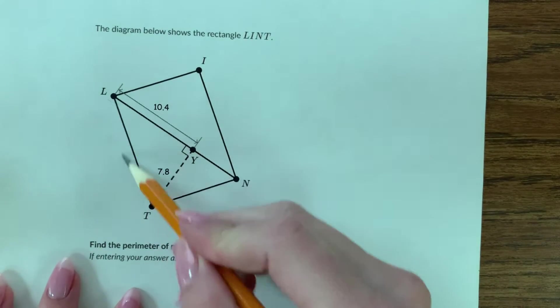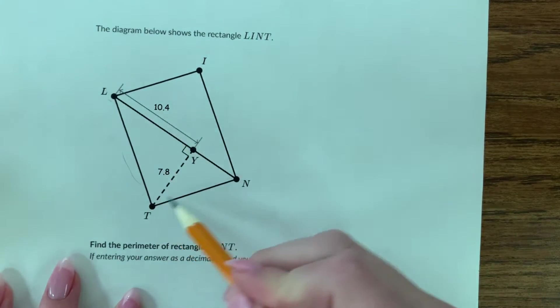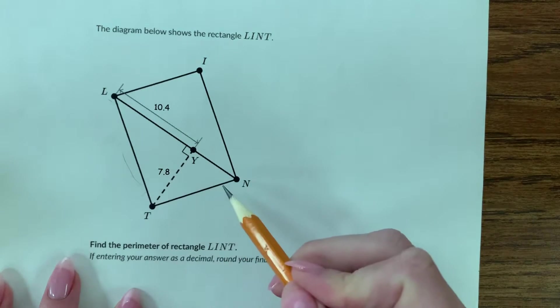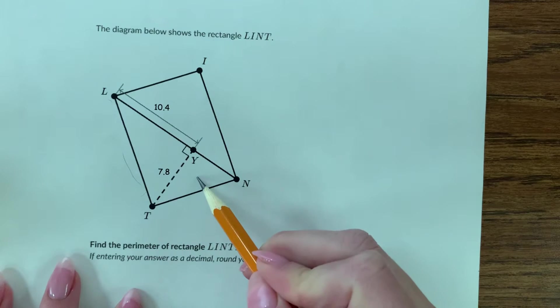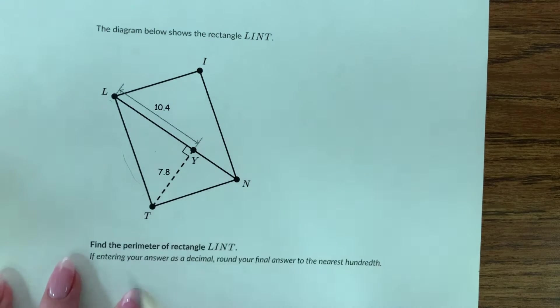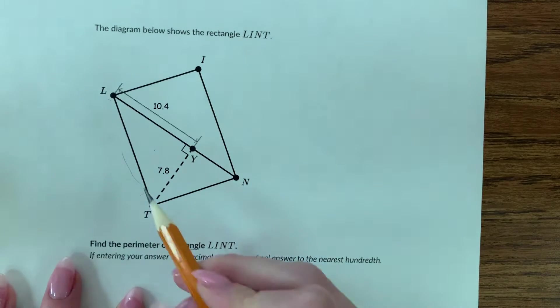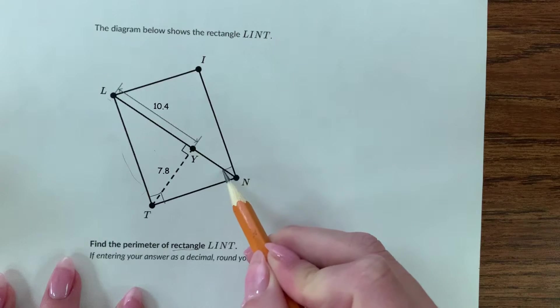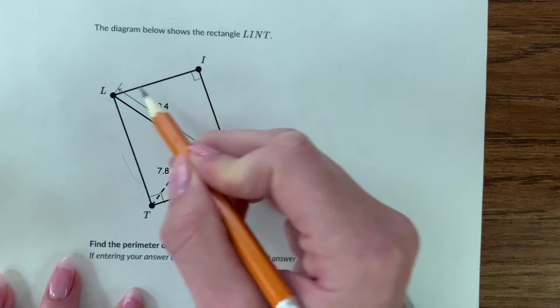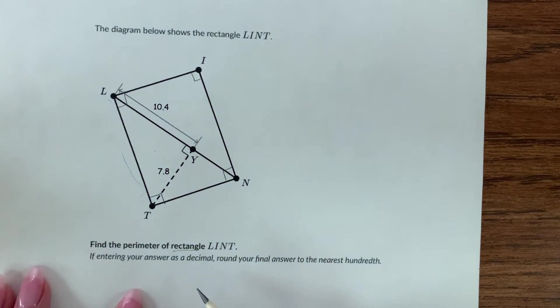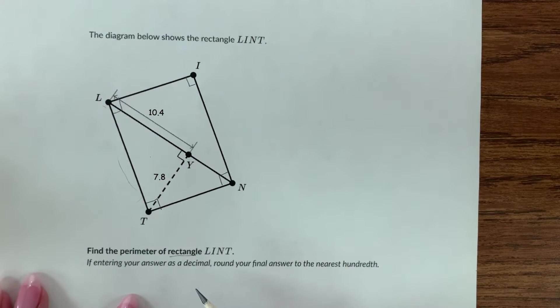One is this triple right triangle right here, so you can see the triple right triangle LTN with the small triangle here and the medium triangle right here. It also refers to the whole shape as a rectangle, so we know that this is a right angle here, this is a right angle here, this is a right angle, and this is a right angle.